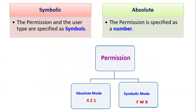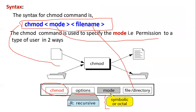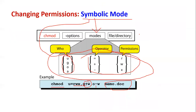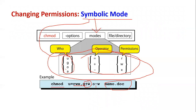In symbolic mode you change the permission mode using symbols — characters and symbols are used. In absolute mode, permission is mentioned in the form of numbers — numbers are used instead of letters, characters and symbols.